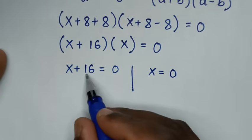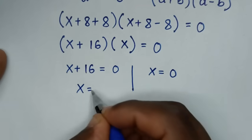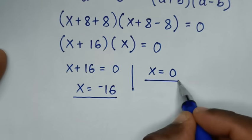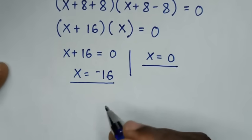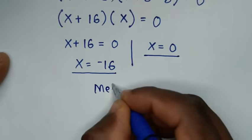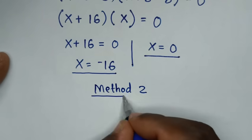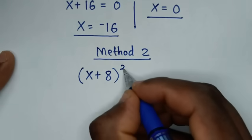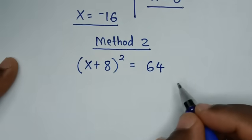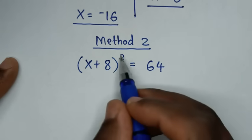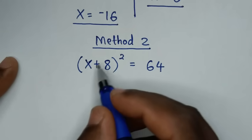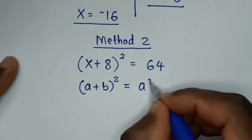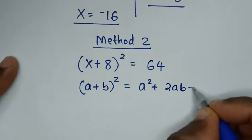From the first solution we take 16 to the right side, so x = −16. The second value of x is x = 0. Now to solve using the second method, let's call this Method 2. From our problem (x + 8)² = 64, in the first step we apply the expansion rule: (a + b)² = a² + 2ab + b².